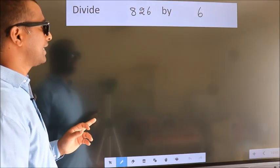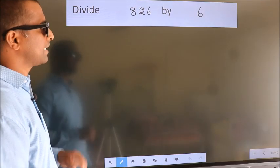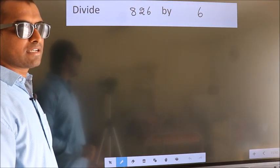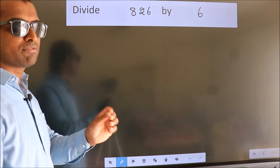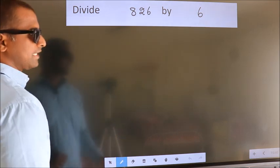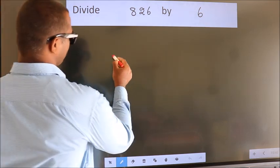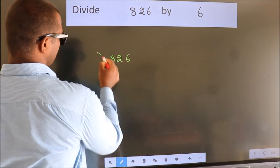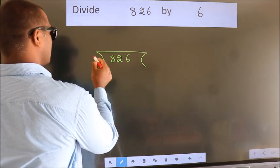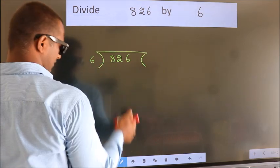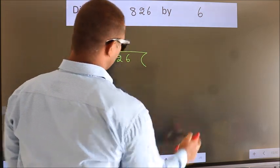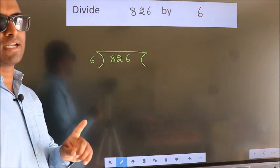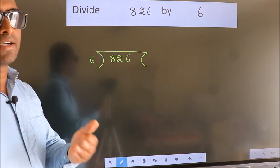Divide 8.26 by 6. To do this division, we should frame it in this way: 8.26 here, 6 here. This is your step 1.